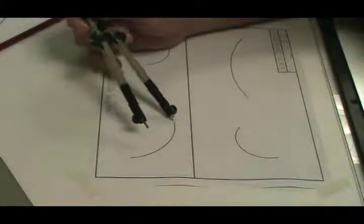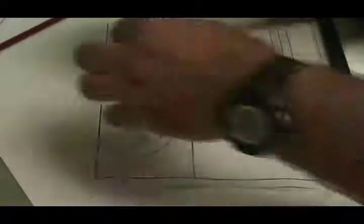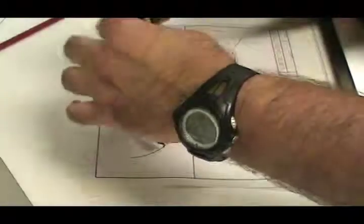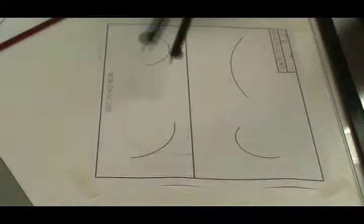Again, we're going to pick our arc and put the point of the compass on one end of the arc. Open the compass so that it's more than half the distance of the arc open and draw an arc.